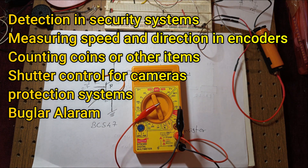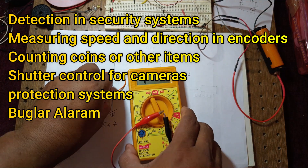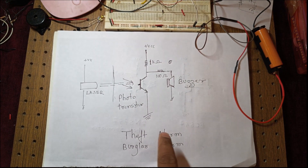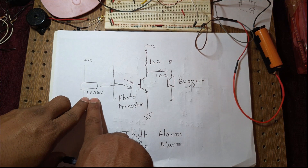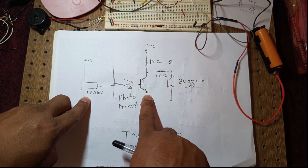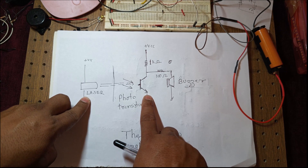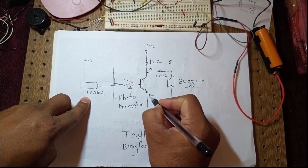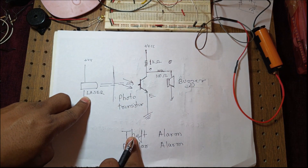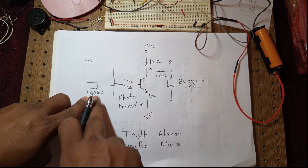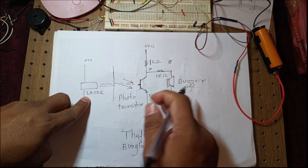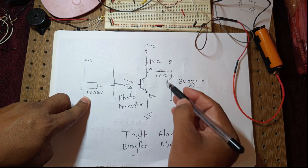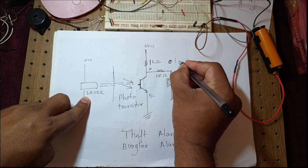Let us see a small application — a burglar alarm. On one side we have a laser, and on the other side we have the photo transistor. The collector and emitter are connected, and the base acts on the light. When the laser light is falling on the photo transistor it is on, so maximum current flows from collector to emitter and the output is logic zero.